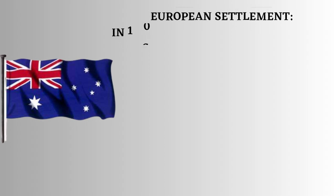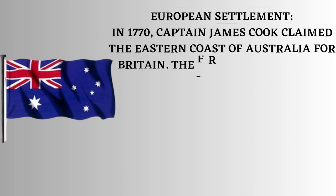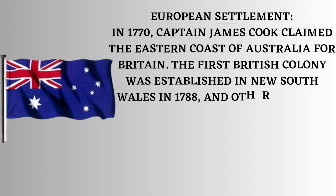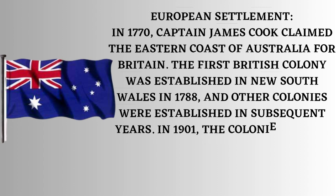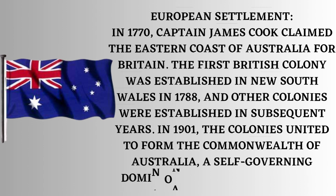European Settlement: In 1770, Captain James Cook claimed the eastern coast of Australia for Britain. The first British colony was established in New South Wales in 1788, and other colonies were established in subsequent years. In 1901, the colonies united to form the Commonwealth of Australia, a self-governing dominion of the British Empire.